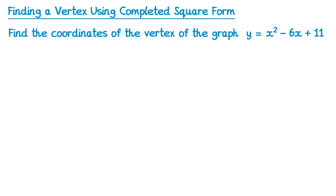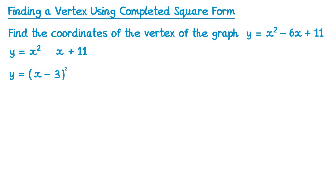To start this question we're going to write down the equation of the graph again, but on the right hand side we're going to complete the square. The left hand side stays as y. So we have y equals a bracket squared. The coefficient of x is negative 6, so we'll halve that to get negative 3. We then subtract the square of that — 3 squared is 9 — so take away 9, and then we have the 11 from the previous line. Simplifying, negative 9 add 11 is positive 2. We've now written this in the completed square form: y = (x − 3)² + 2.